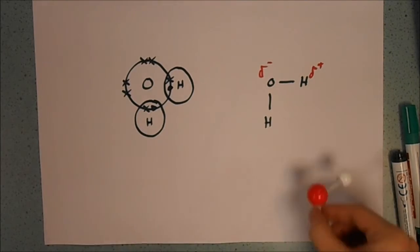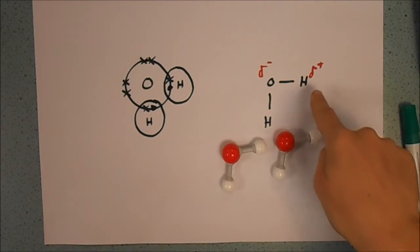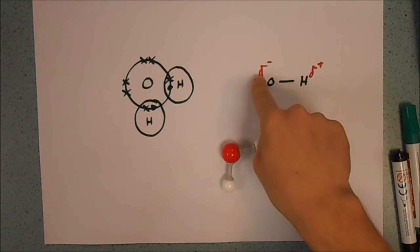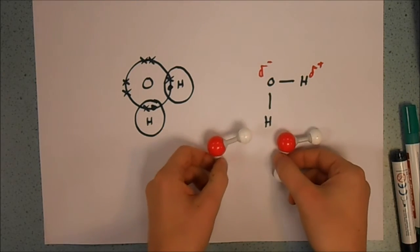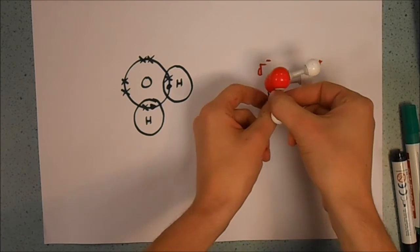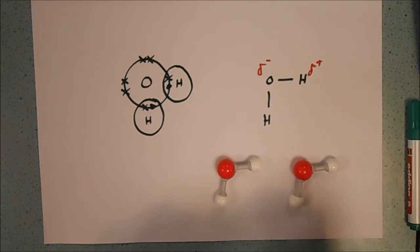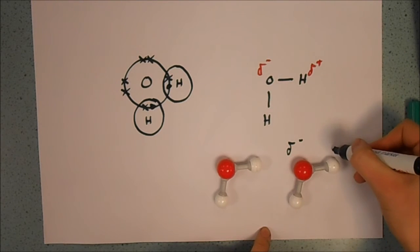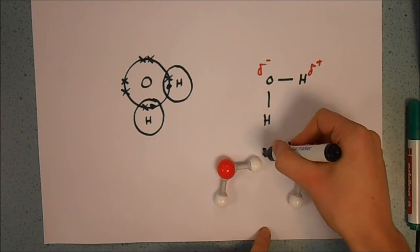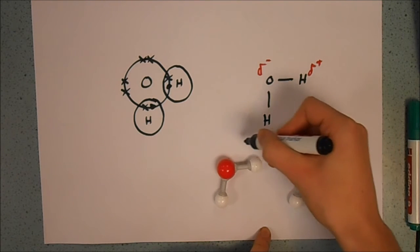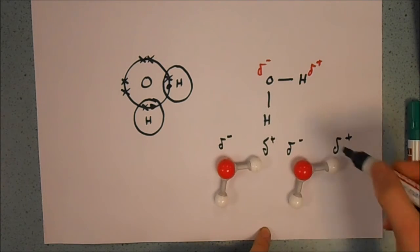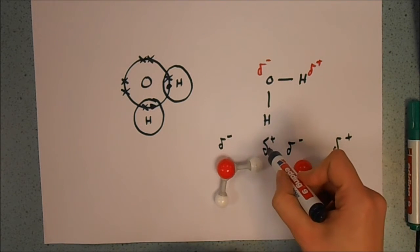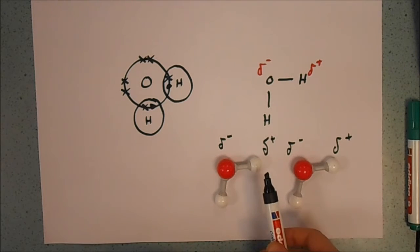And so what that means is that if I take two molecules which have a delta plus and a delta minus, like this, and put them together, we actually have a delta minus on this one and a delta plus on that one, and the same on this one. And so what that means is that we have an attraction between here and here, but there's a bit more to it than that.